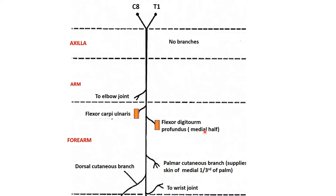Remember that ulnar is always related to the medial side — the ulnar bone is also on the medial side, so ulnar and medial go hand in hand. So the two forearm muscles are flexor carpi ulnaris and the medial half of flexor digitorum profundus. Then two cutaneous branches are given: the palmar cutaneous branch and the dorsal cutaneous branch, which supply the medial one-third of the palmar surface and the dorsal surface of the hand.